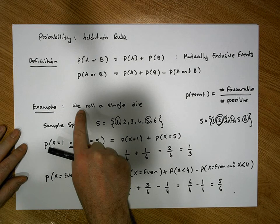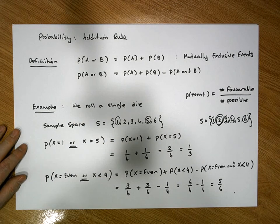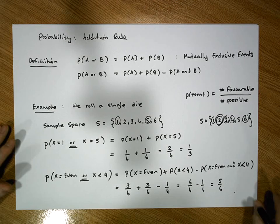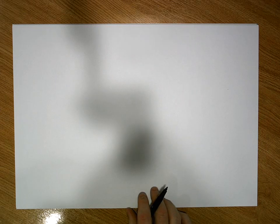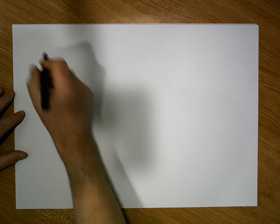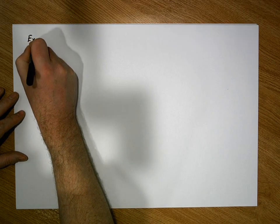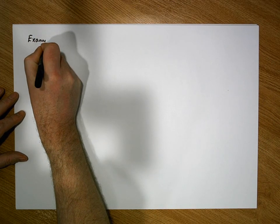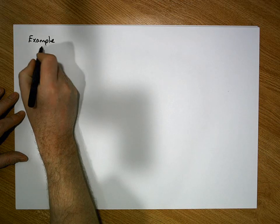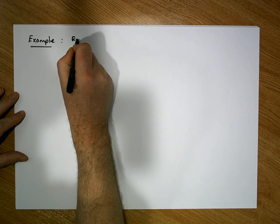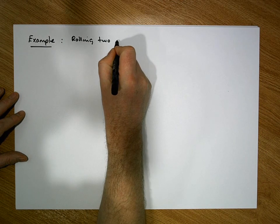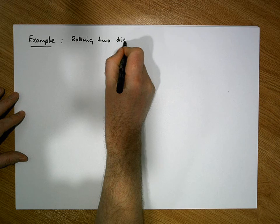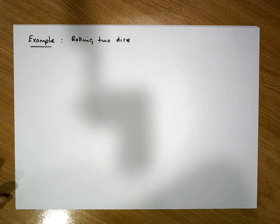That was a straightforward experiment involving rolling a single die. Let's do another example — this time the experiment involves rolling two dice.